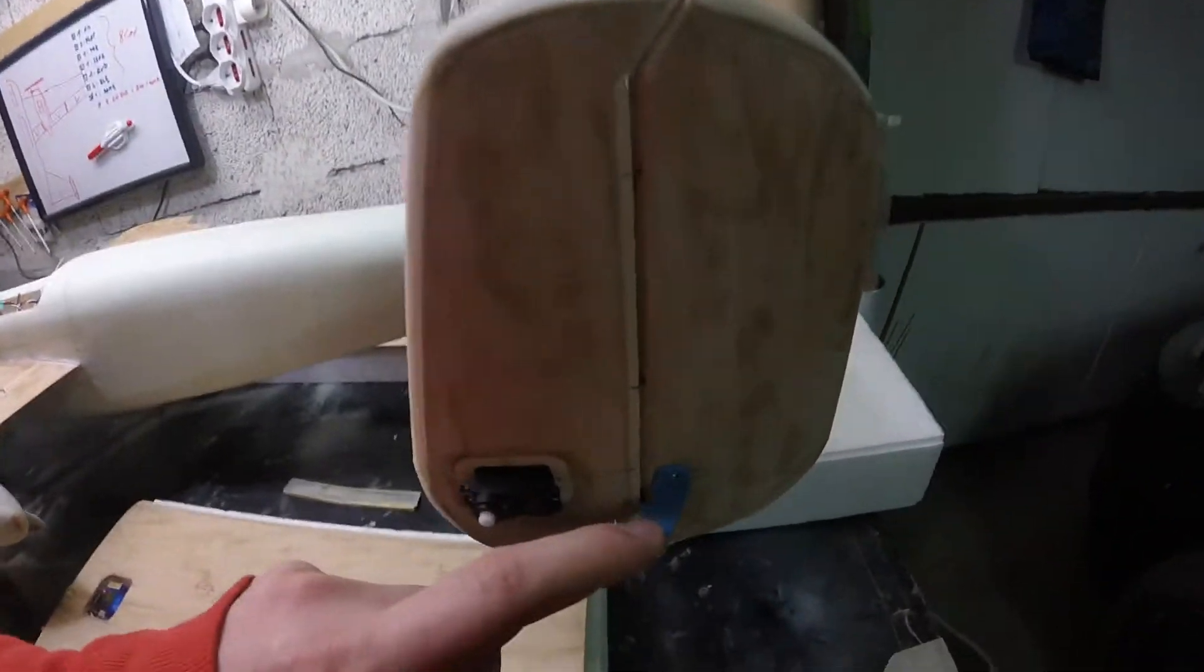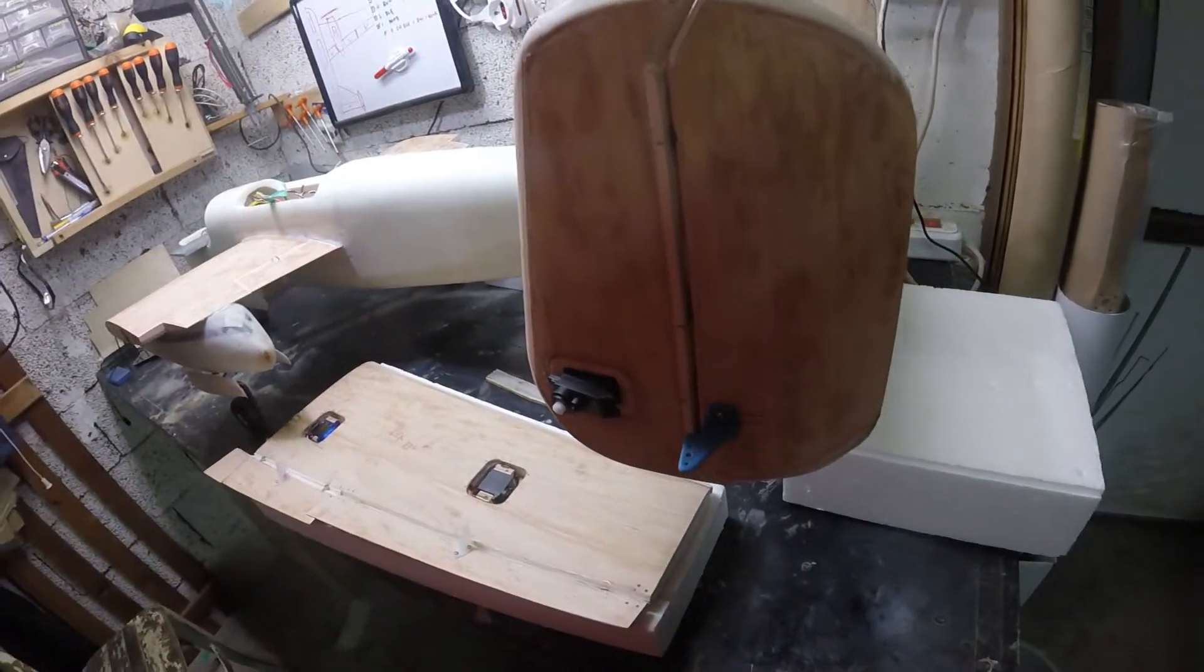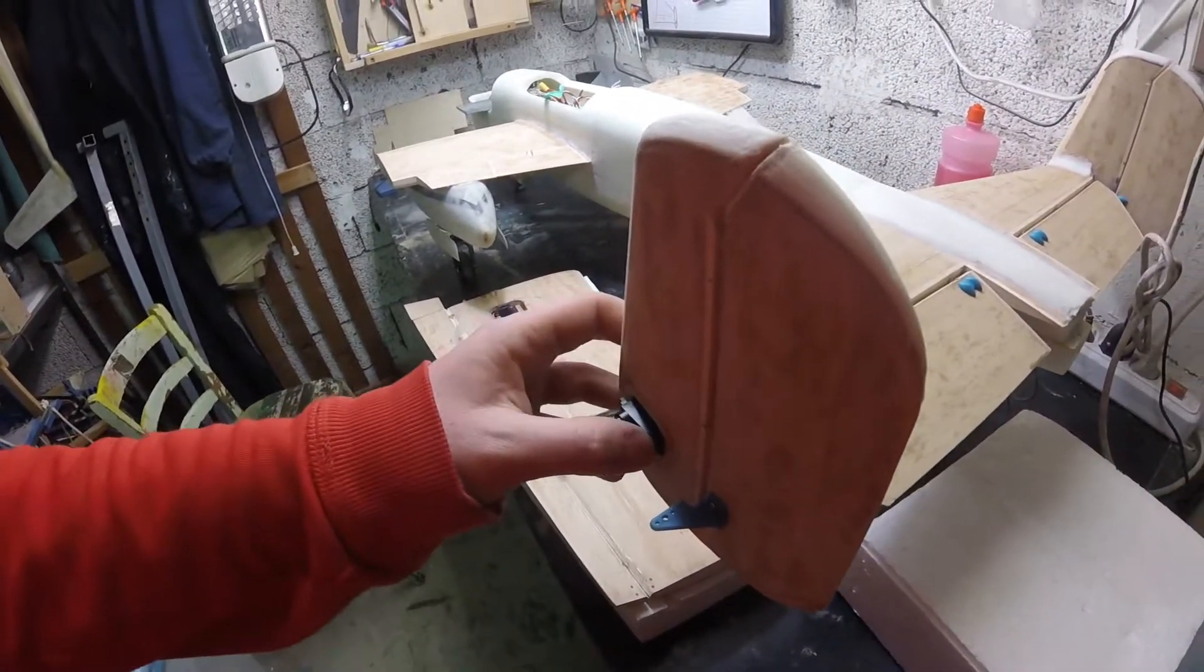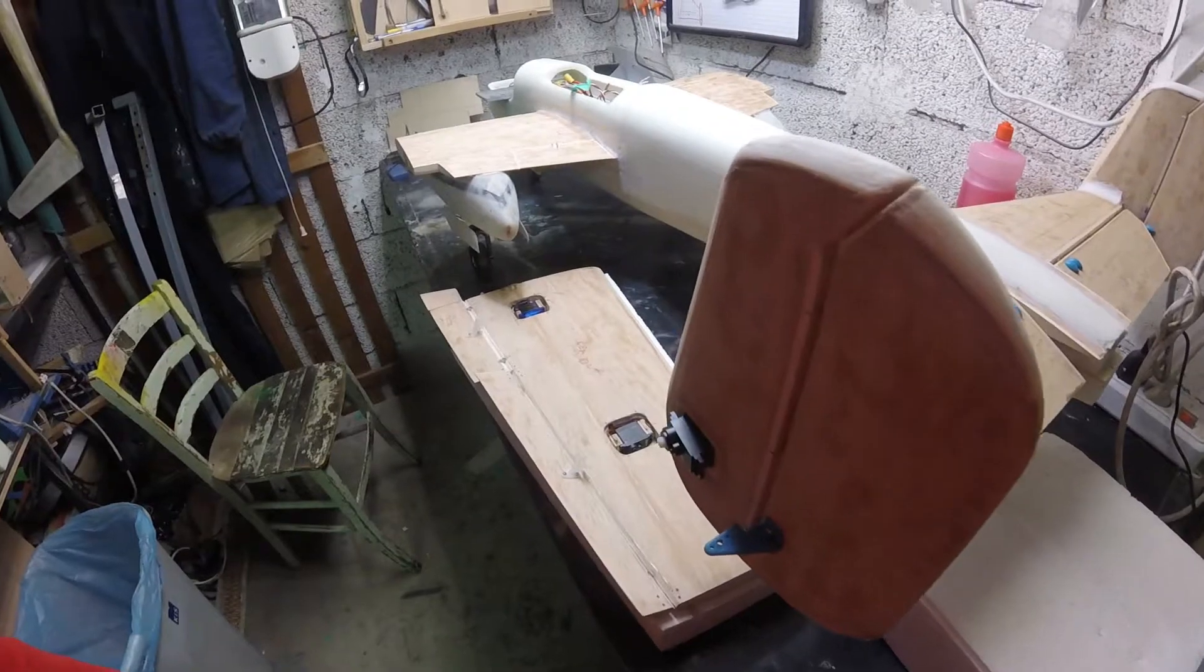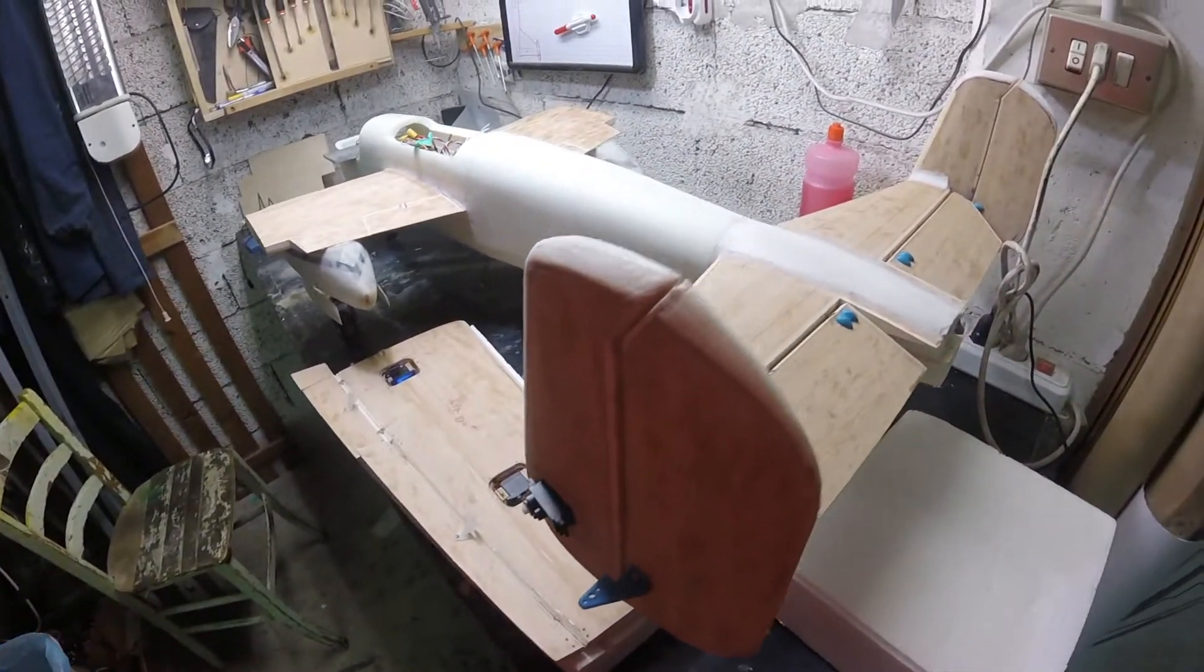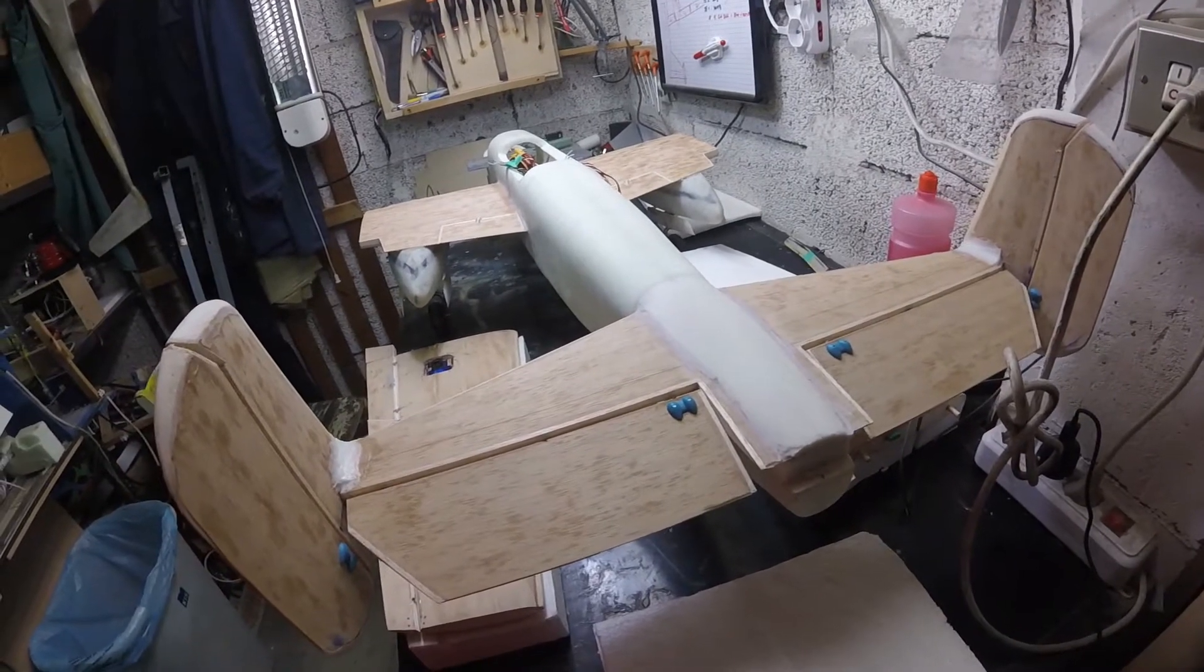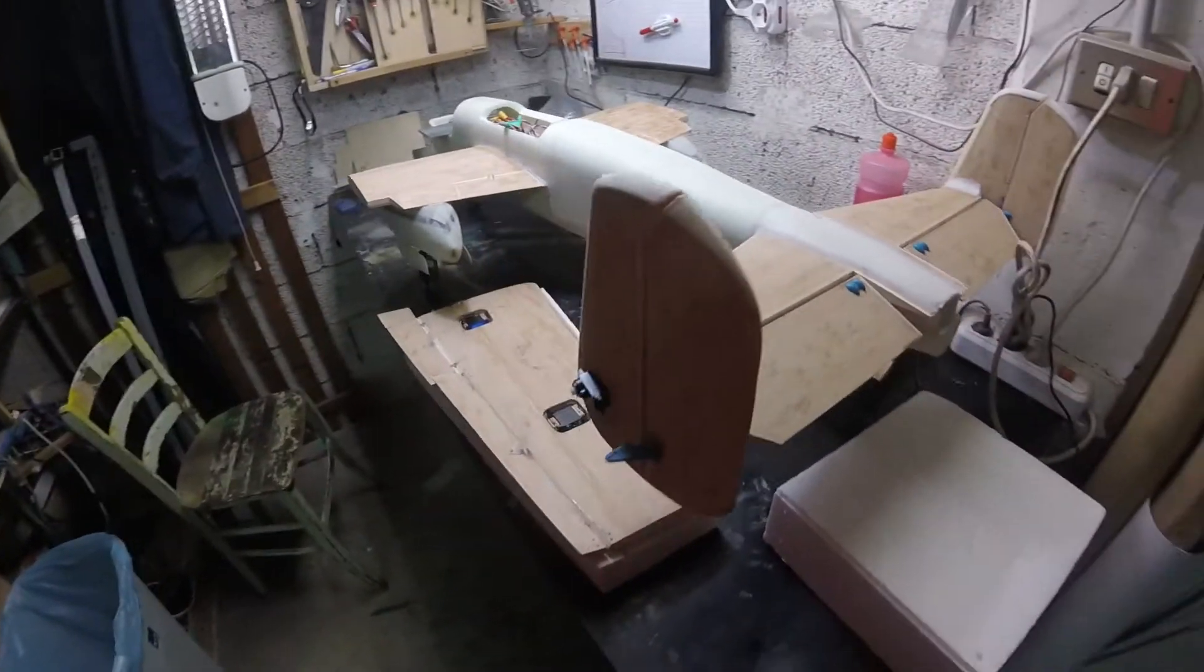So I've already mounted the servo horns. They aren't very pretty to see out of the line of the plane, but I didn't have another option. I think that that is the best way to do it.